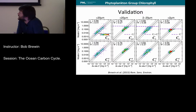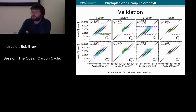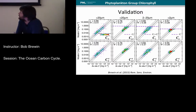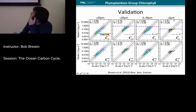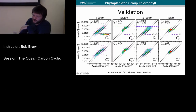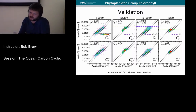This is an example of a validation of that empirical approach. We have satellite-derived chlorophyll concentrations against in-situ chlorophyll concentrations for micro (cells greater than 20 micron), 2 to 20 micron, and the very small cells. The root mean square errors are not too bad, showing that there is a lot of potential to infer community structure information from remote sensing observations.